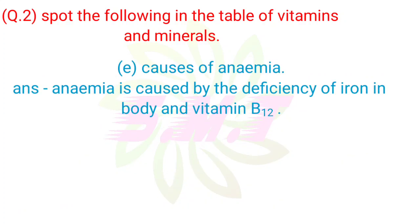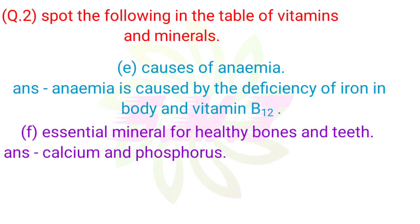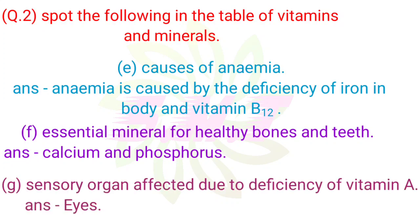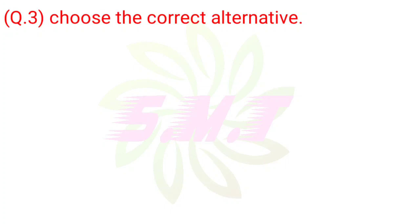E. Causes of anemia: anemia is caused by the deficiency of iron in the body and Vitamin B12. F. Essential mineral for healthy bones and teeth: calcium and phosphorus. G. Sensory organ affected due to the deficiency of Vitamin A: eyes.